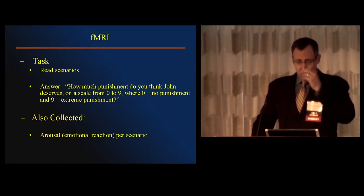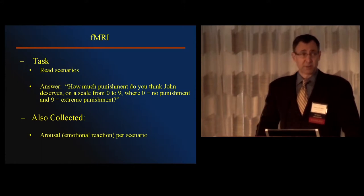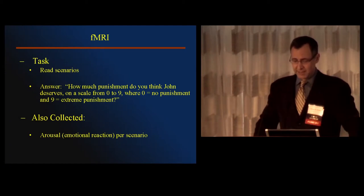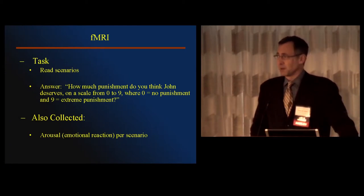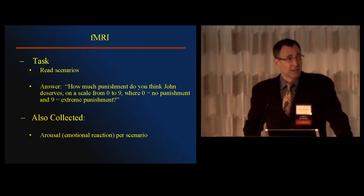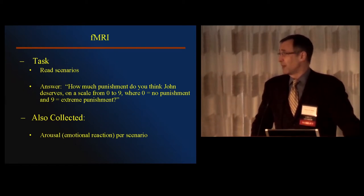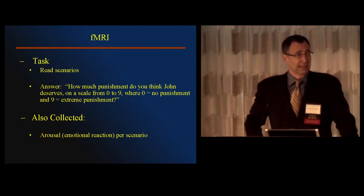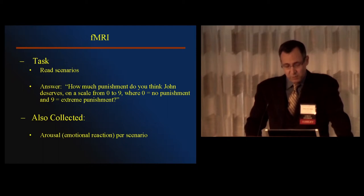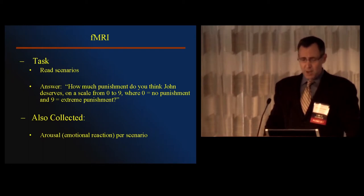We also were asking them, we were collecting behaviorally, their punishment choice for John in each of these scenarios. So they would read the scenario and answer how much punishment do you think John deserves on a scale from zero to nine, where zero is no punishment and nine is extreme punishment. We had to subjectivize this, of course, because people's maximum punishment might vary quite considerably between those who would never give more than 20 years for anything and others who might give electrocution for jaywalking. So this enables us to get a spread on which we could compare people. And we also collected arousal data as well.